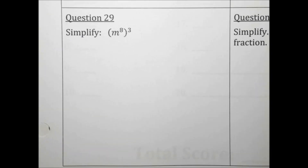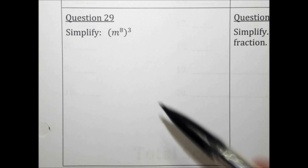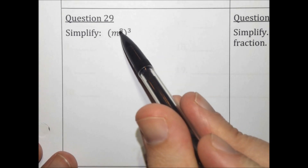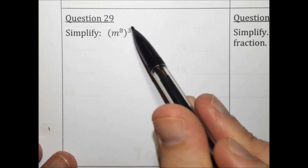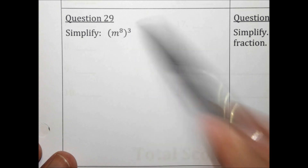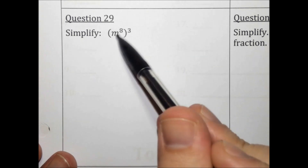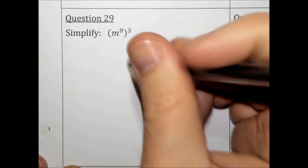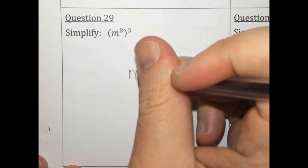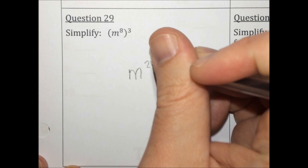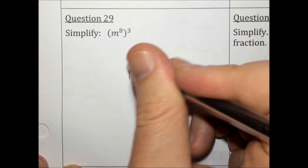Simplify m to the 8th in parentheses to the 3rd power. When you have an exponent raised to another exponent, you multiply the exponents. 8 times 3 is 24. The answer is m to the 24th.